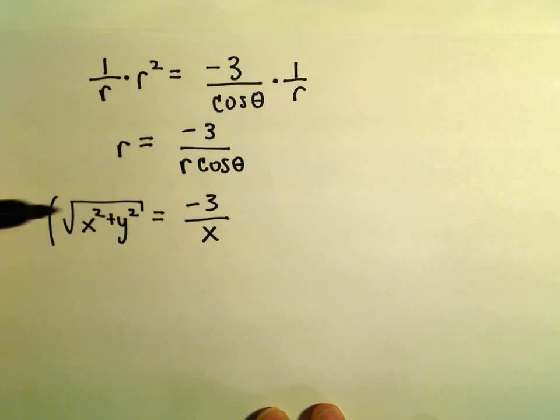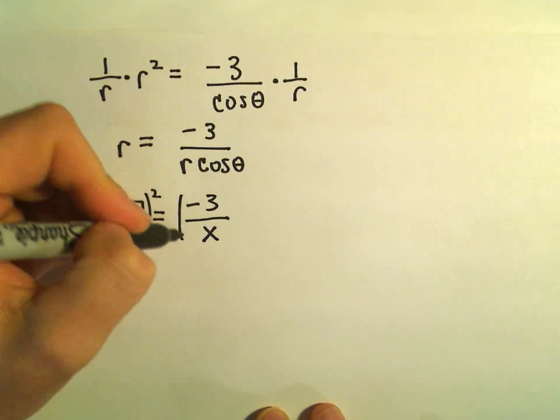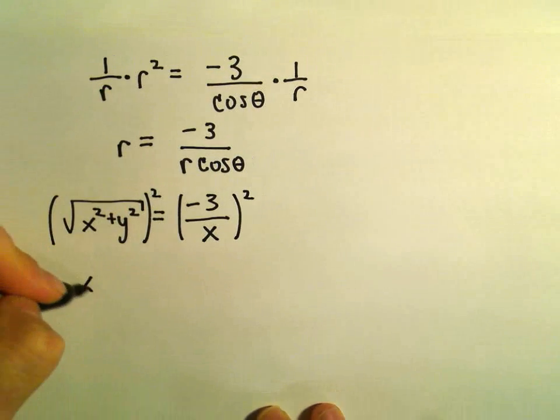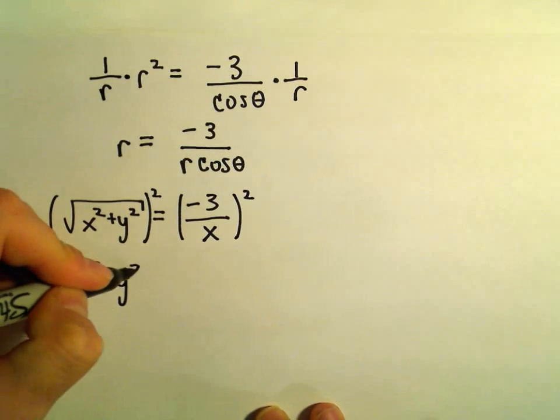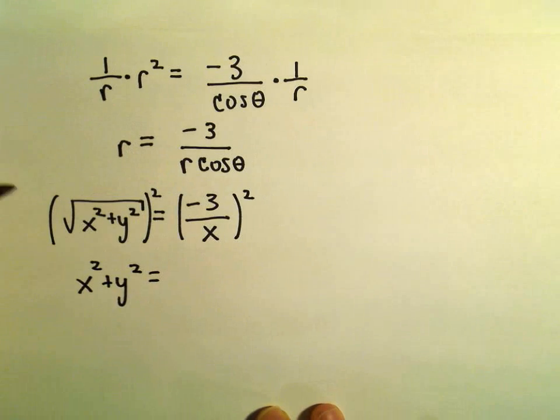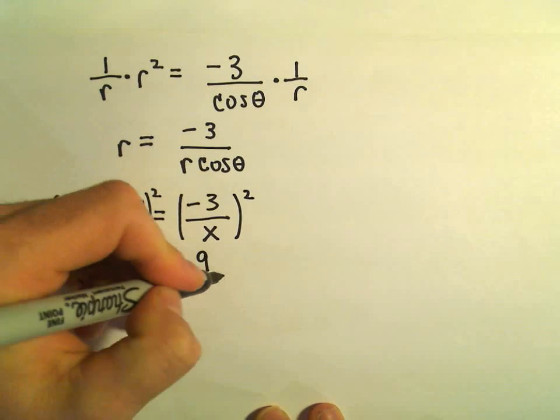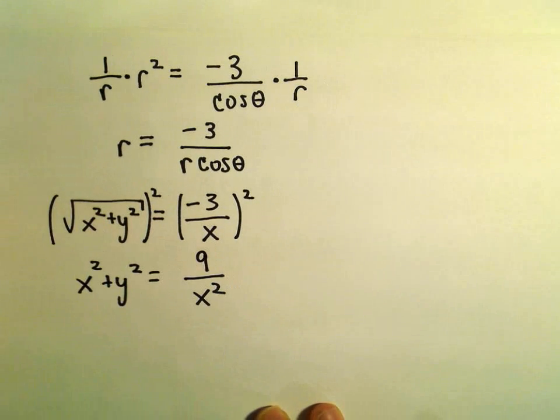We can square both sides. So we've got x² + y² equals, let's see, -3 times -3 would be 9 over x².